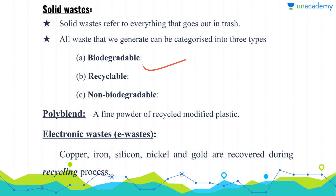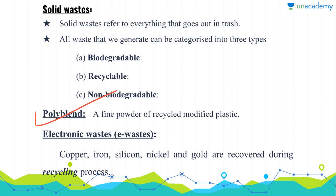Please find out one or two lines of detail about these. Now we have Polyvents. Polyvents is actually a fine powder of recycled modified plastic and it can be used for the construction of highways along with the bitumen. It makes the road very effective against rain or water clogging.